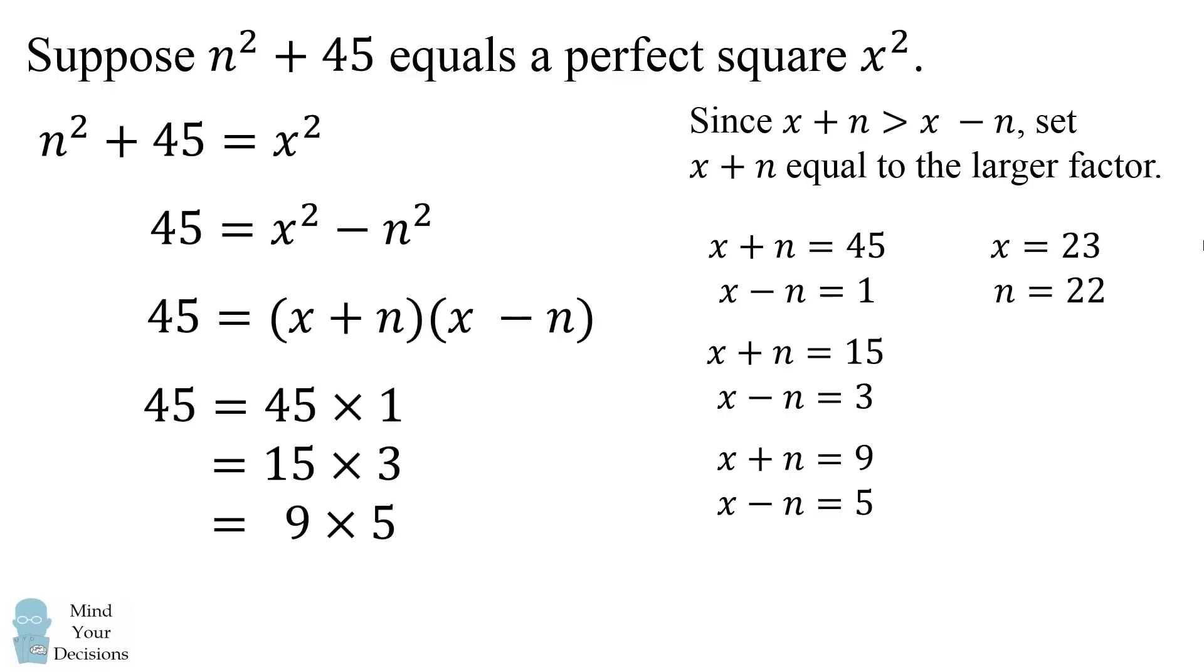We can use the same trick for the next two equations as well. We end up with x is equal to 9 and n equals 6, and then x is equal to 7 and n equals 2.